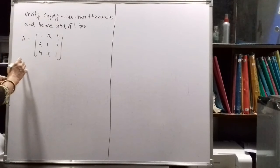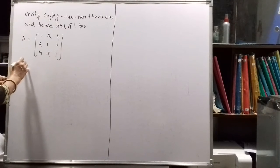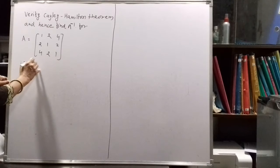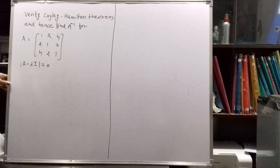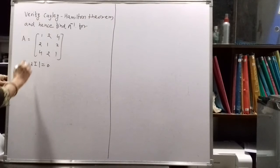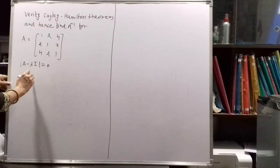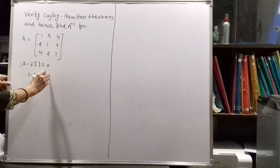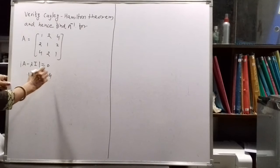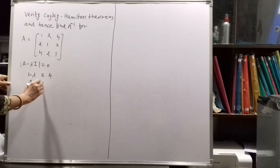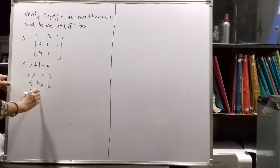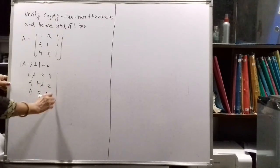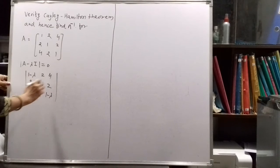The characteristic equation is det(A minus lambda I) equal to 0. So this will equal to the 3x3 determinant with (1 - λ) on the diagonal and 2, 4, 2 as off-diagonal entries, set equal to 0.